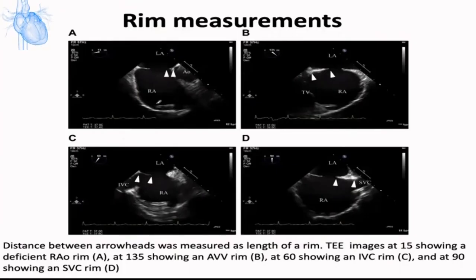Measurement of rims: from this point to this point, this point to this point — this is the SVC rim — and this point to this point. We should measure the rim in this way.